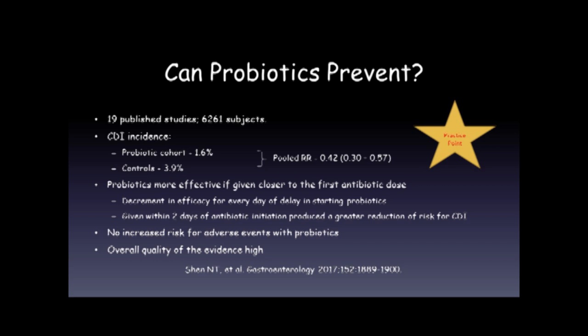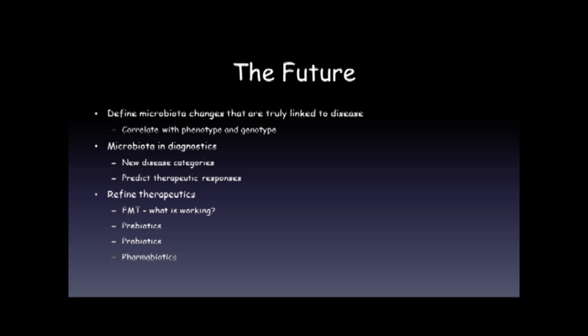Looking to the future, we need to define microbiota changes that are truly linked to disease and correlate changes in the microbiota with disease phenotype and host genotype. In terms of microbiota and diagnostics, it may help us define new disease categories, and we're already seeing hints that it may predict therapeutic responses. We need to refine our therapeutics — for FMT, we need to find out exactly what is working and how we can tailor FMT to particular disease states. We need more information on prebiotics, probiotics, and the products of bacteria such as pharmabiotics.